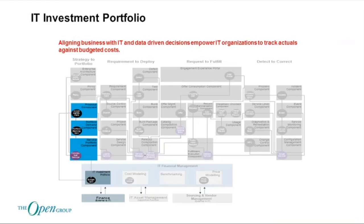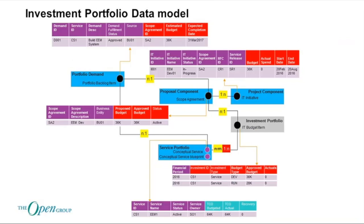Moving backwards to the investment portfolio view — this is where it all comes together. It started with some demand coming in as portfolio backlog items essentially saying 'I want something more to be developed.' We've now defined, listed in red, some extra attributes that IT Financial Management compliant modules must capture, such as the investment budget associated with a portfolio demand. For example, someone has estimated it will cost 36k to deliver the next version of employee expense management, and they also estimated when it would be complete.